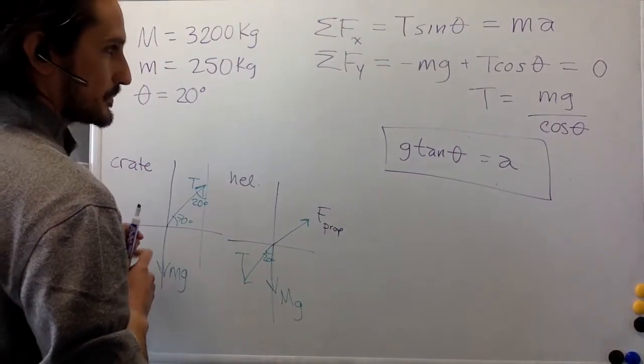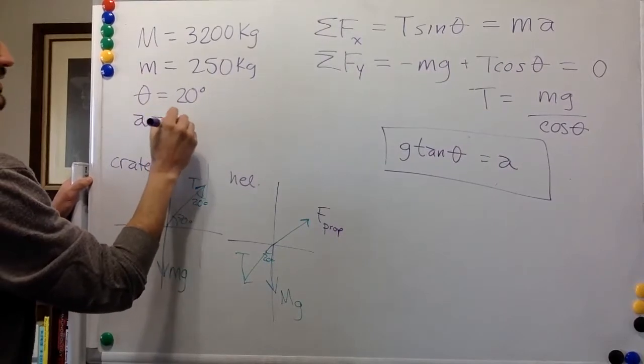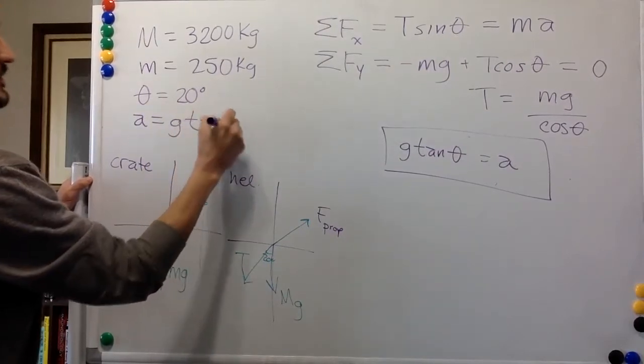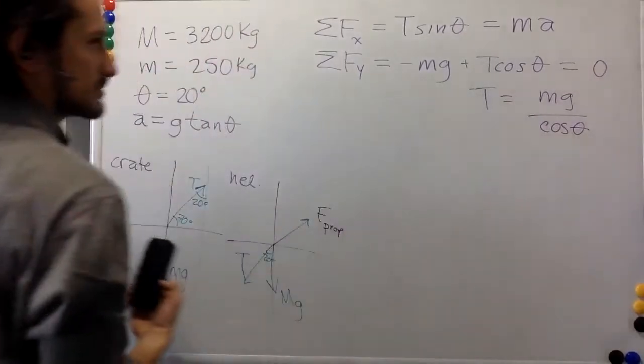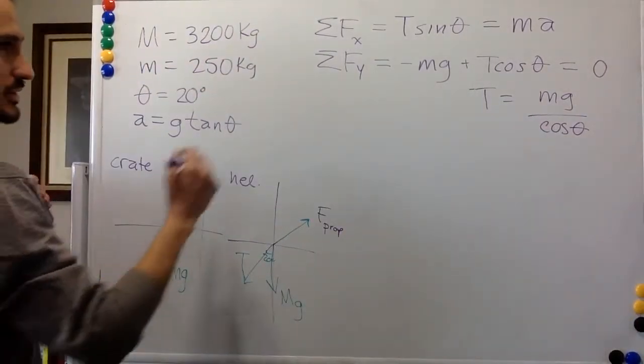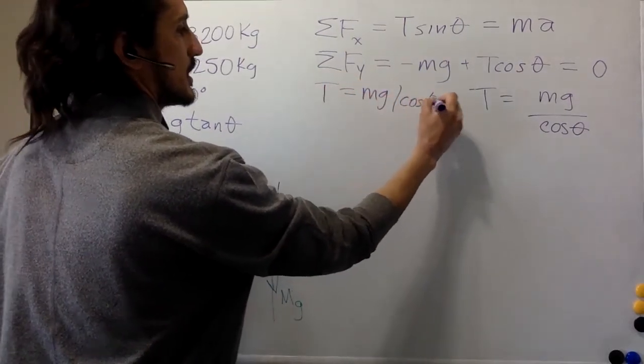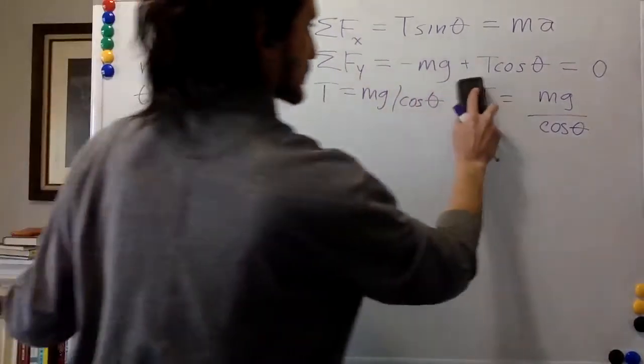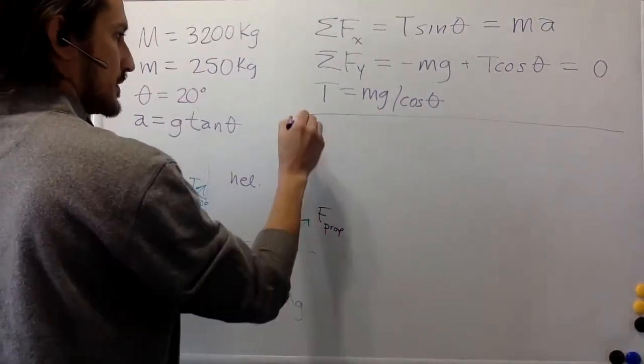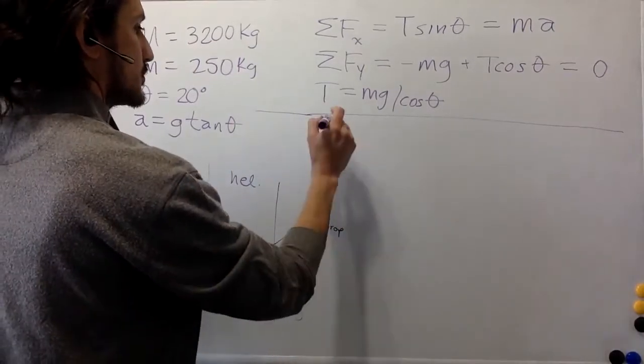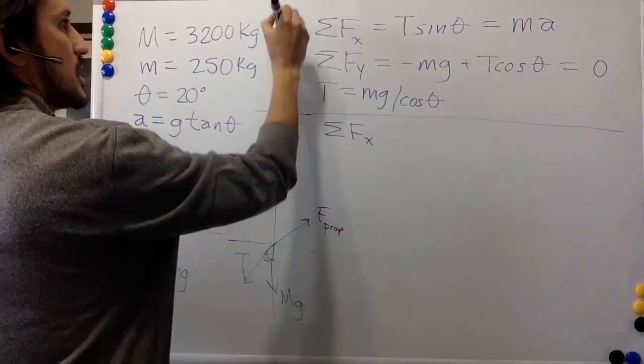And we have an acceleration constraint. The two objects are moving together, they're held by this rope. And so the acceleration of the crate in x is equal to the acceleration of the helicopter in x, which is just the acceleration. There's no acceleration in y. So we can get rid of this one. That is the acceleration of the whole thing. I'm going to put it over here. The acceleration is g tangent theta. This one is also good to remember. T equals mg divided by cosine theta.